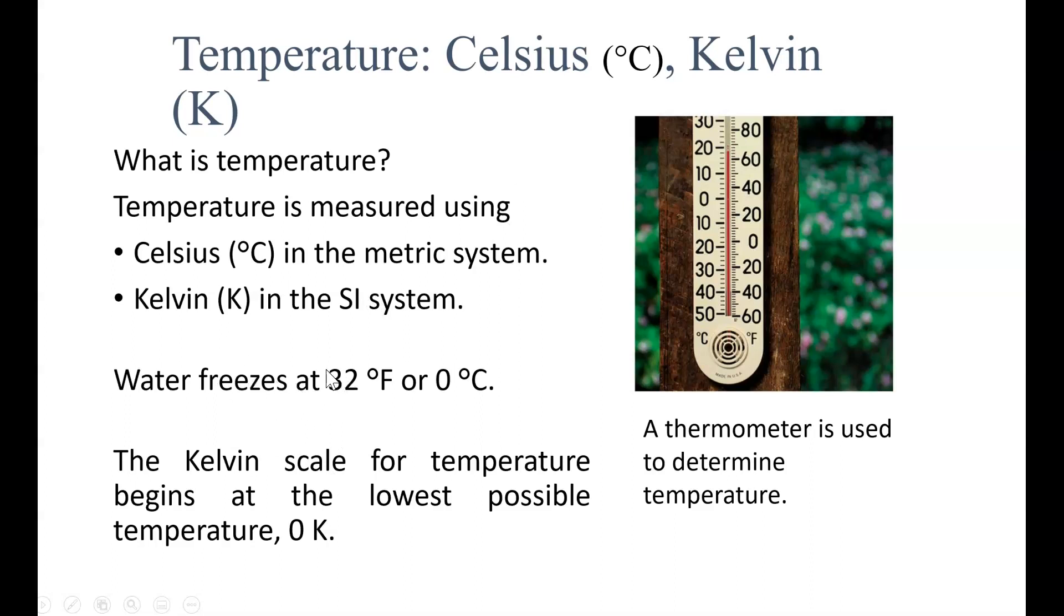Since this is a measure that's not as commonly used in the United States, it's important to know that water freezes at 32 degrees Fahrenheit or zero degrees Celsius. This is going to be important as we look at some of the experiments, different ways that water behaves. The Kelvin scale is an absolute temperature scale. You notice that there's no degree symbol here. That just means that it starts at zero, at the lowest possible temperature of zero Kelvin. So you cannot have negative temperatures in the Kelvin scale. You can have negative temperatures in the Celsius scale.